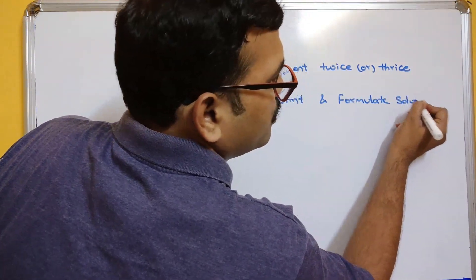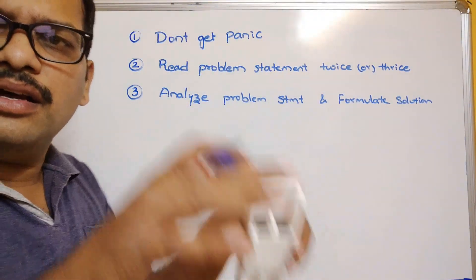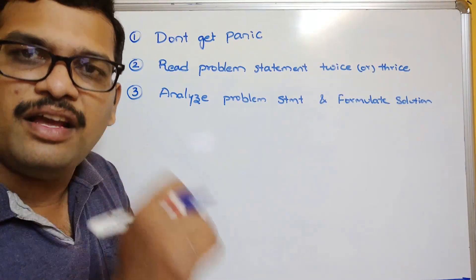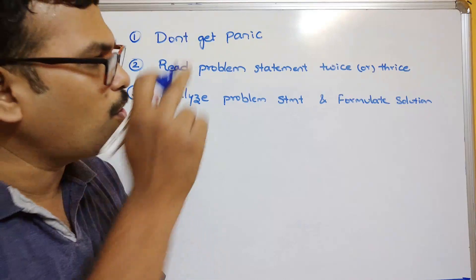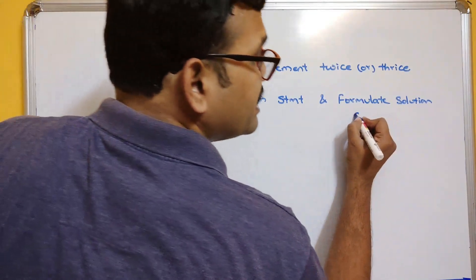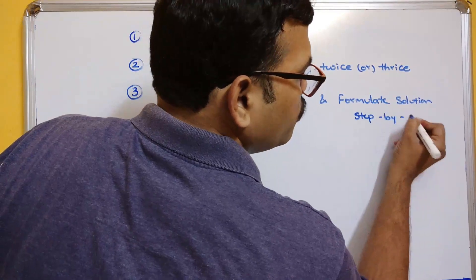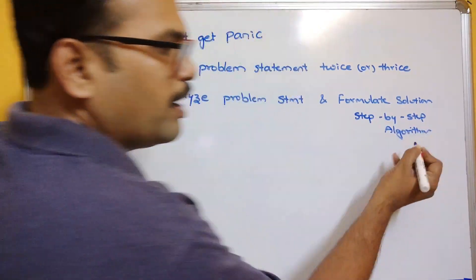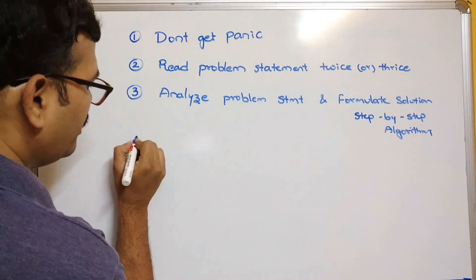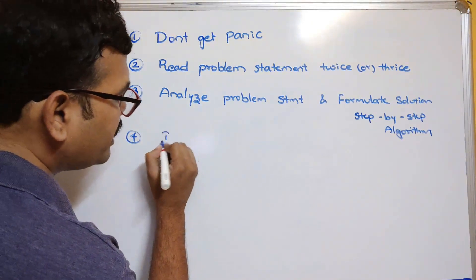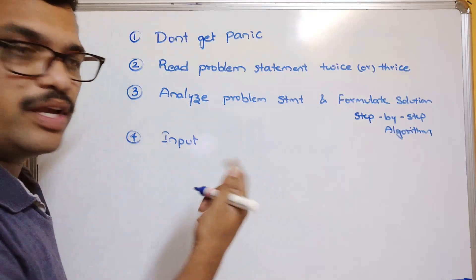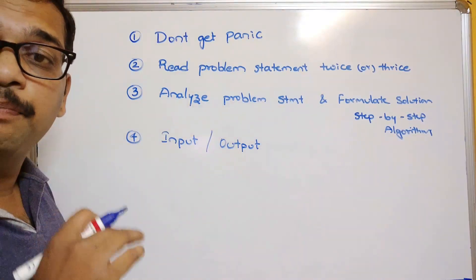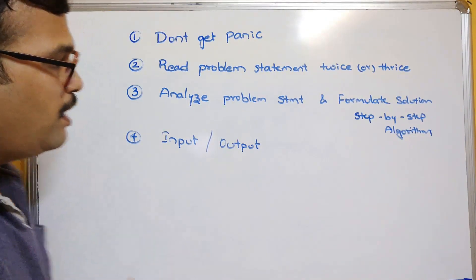Don't open the IDE and start typing the program right away. First, read the problem statement carefully, then take pen and paper and formulate the solution. That means write a step-by-step solution — we usually call this an algorithm. Then identify the inputs and outputs: what input we have to give and what output we need to print.